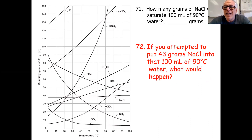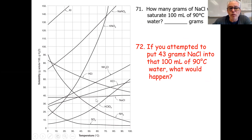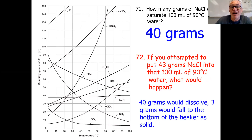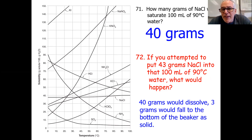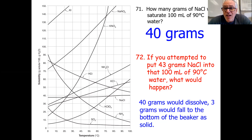How many grams of NaCl will saturate 100 mL of water at 90 degrees? Let's find sodium chloride — it runs right across almost at a flat line. It's going to hold 40 grams. Now, what would happen if you attempted to put 43 grams into that? 40 grams fits in — that's right on the graph at 90 degrees NaCl. If you did that, 40 grams would dissolve but 3 grams would fall to the bottom of the beaker, because the solution could only hold 40 grams of solute. The maximum that dissolves — the saturation point — would be 40 grams.